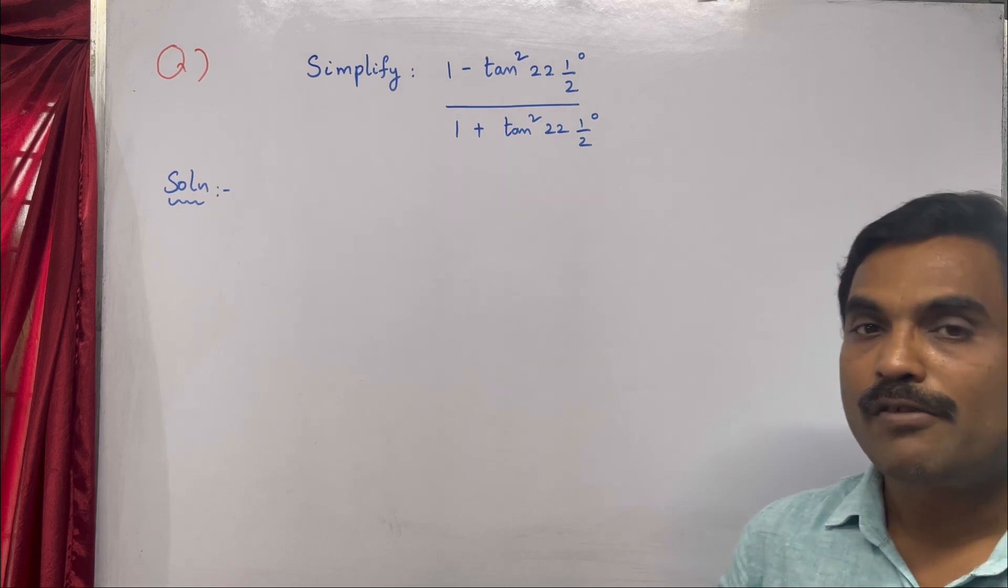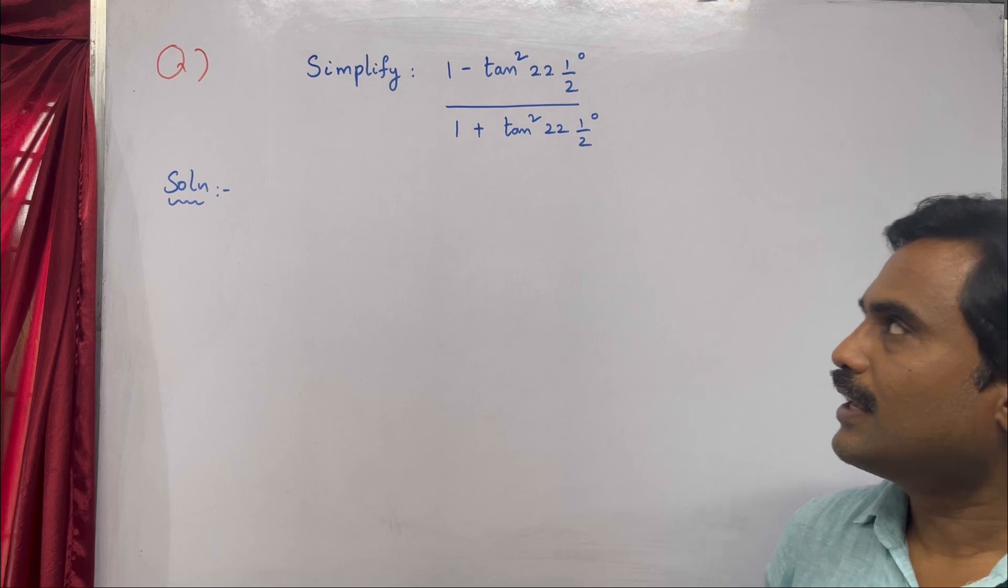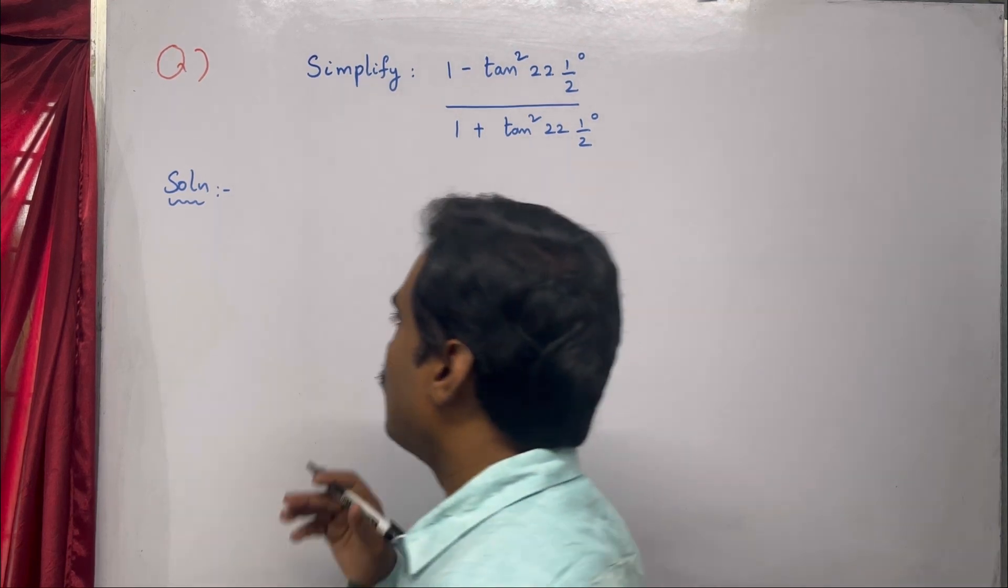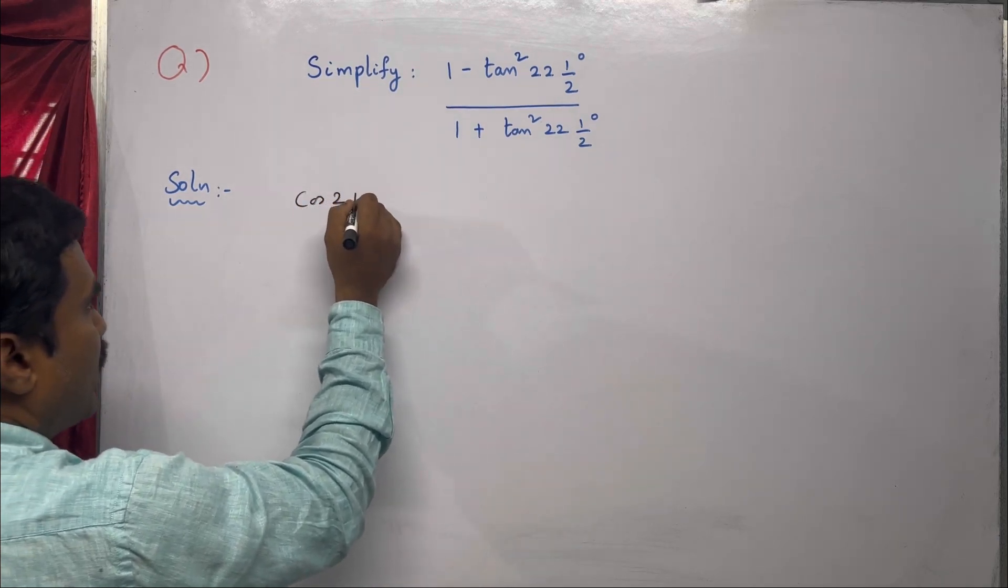For this we need to use the trigonometric formula of cos 2a. Cos 2a can be written as 1 minus tan squared a divided by 1 plus tan squared a, so you have to use it.